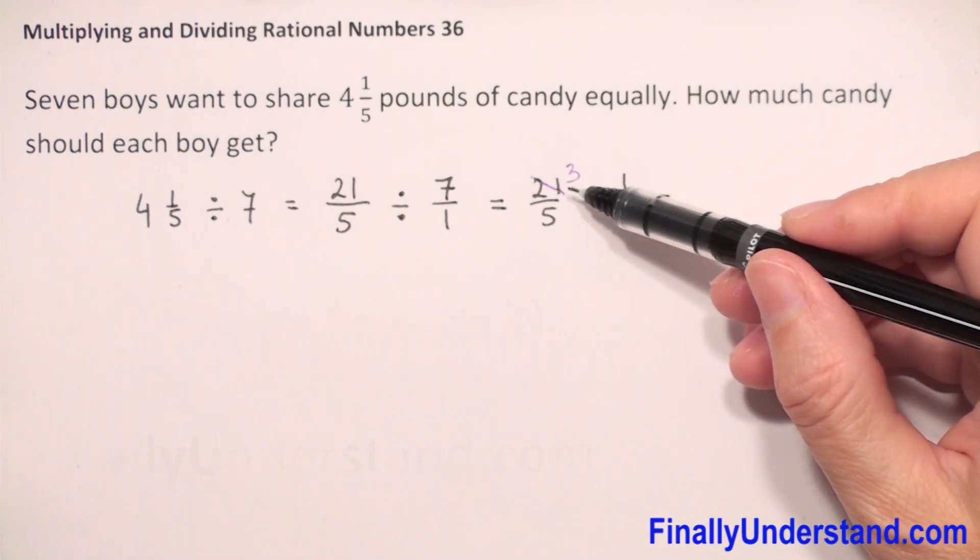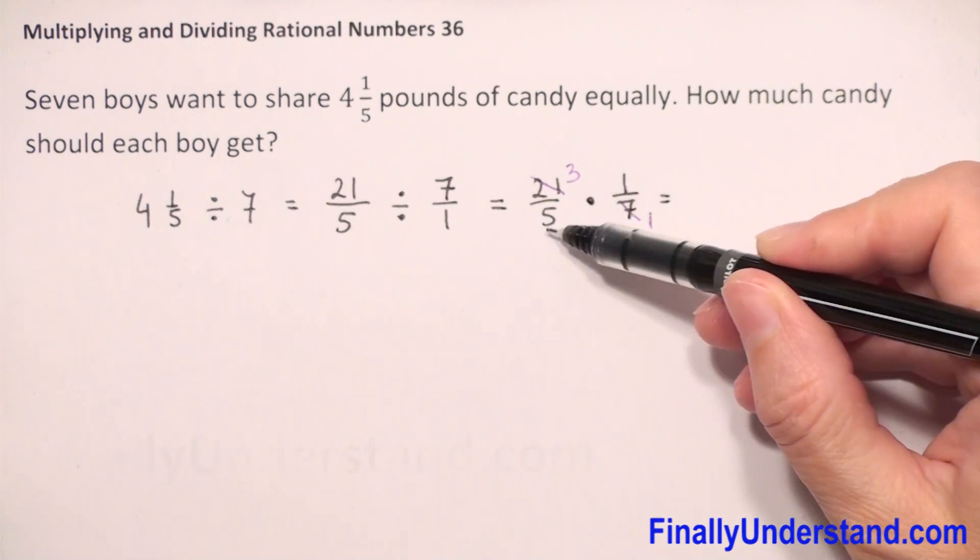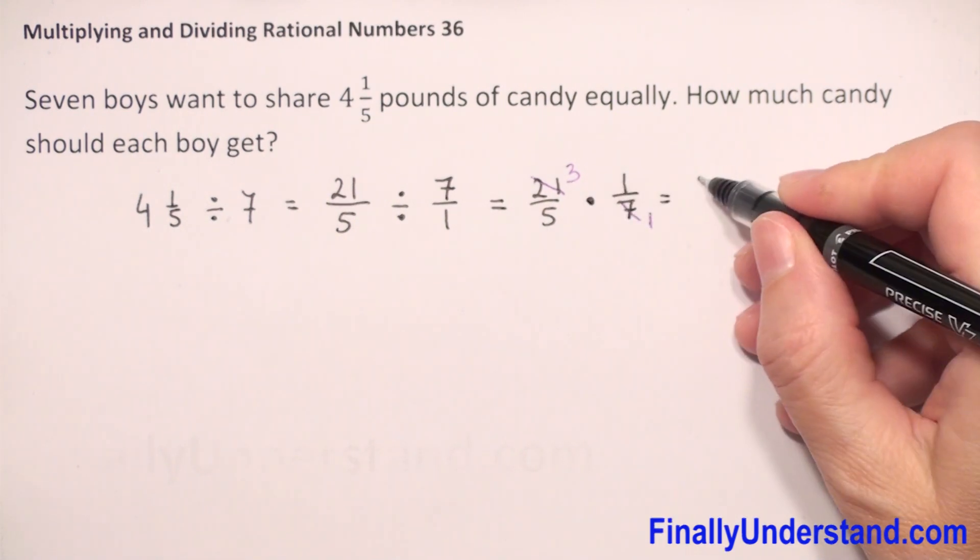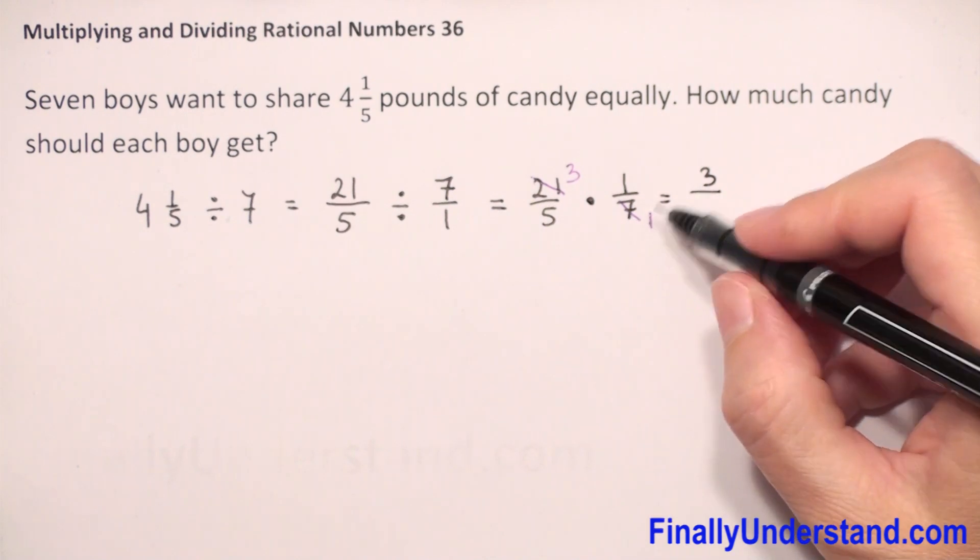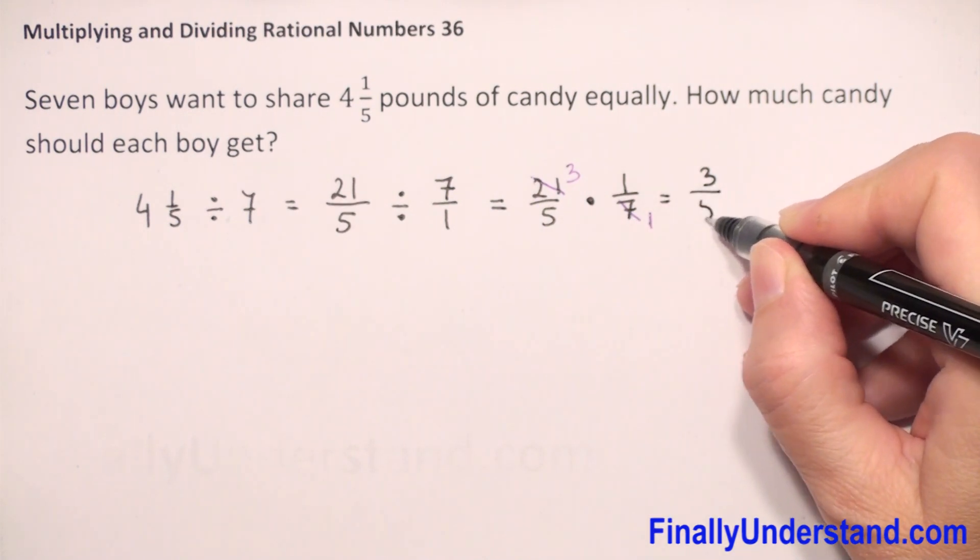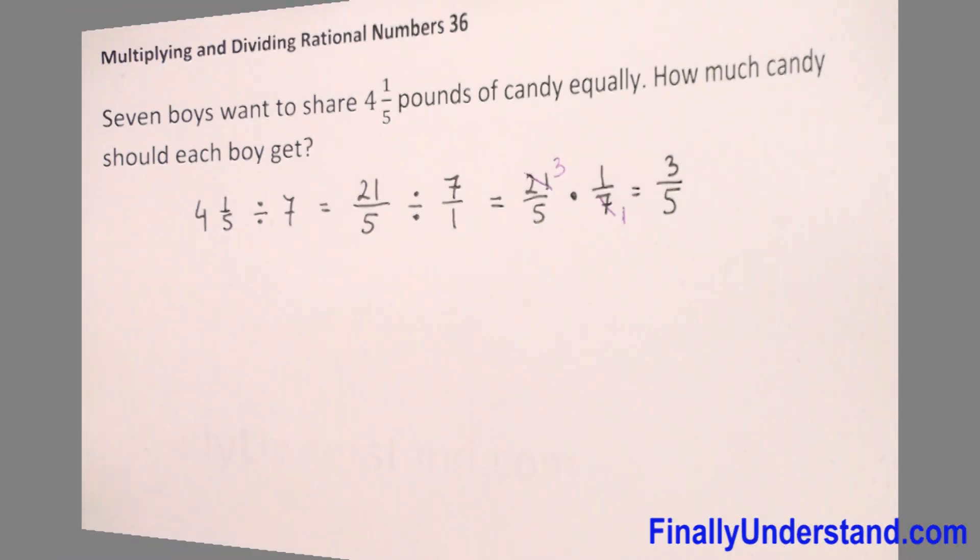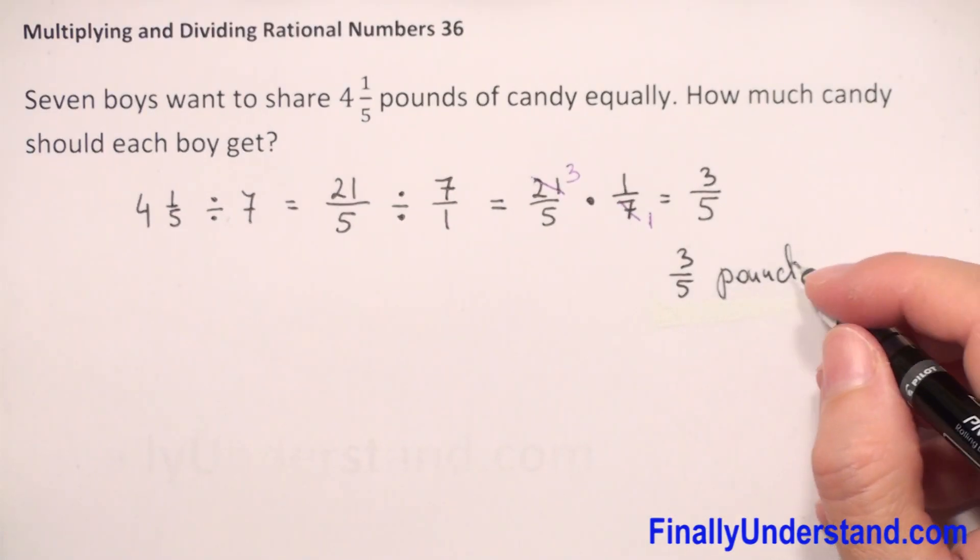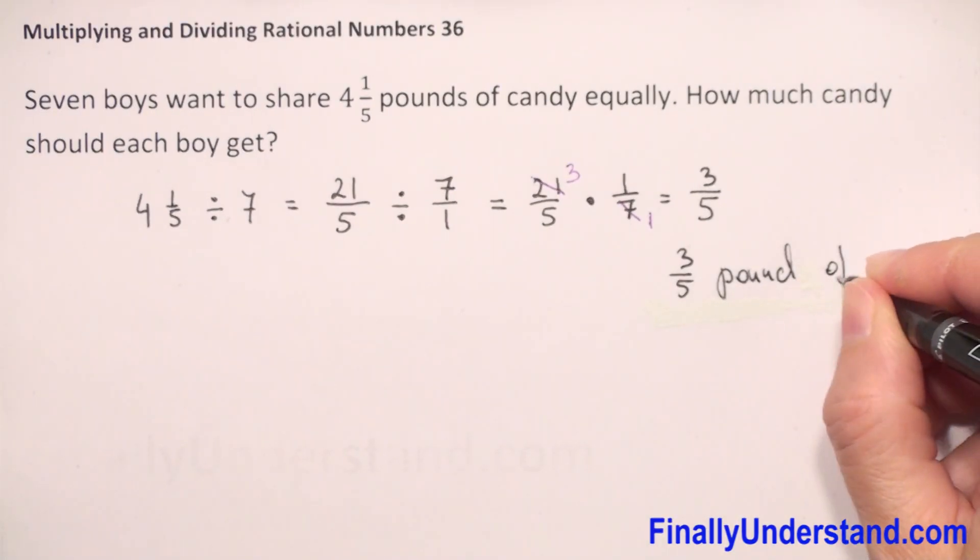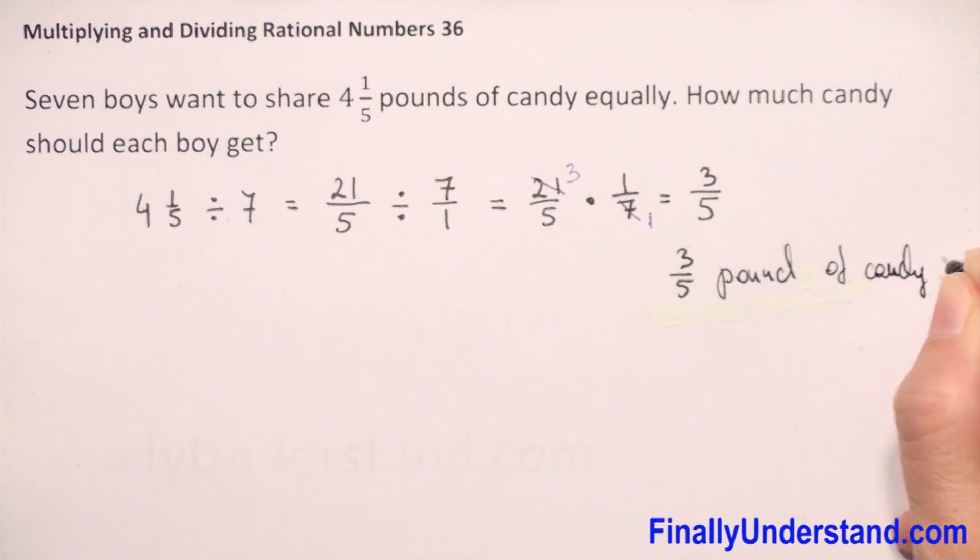When we multiply fractions, we multiply numerator times numerator and denominator times denominator. So 3 times 1 is 3, and 5 times 1 is 5. We get 3/5. This is how much candy each boy should get: 3/5 of a pound of candy. This is my solution.